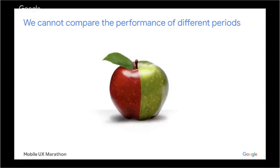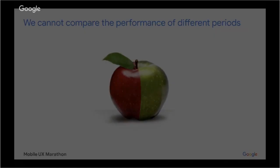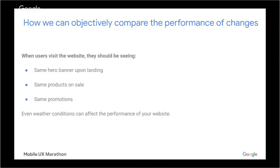When we try to compare, we basically won't be able to compare apples to apples, because we'll be looking at different periods of time with different parameters. In order to compare performance specifically and objectively, users visiting our web page should be seeing exactly the same hero banners upon landing, the same products on sale, and the same promotions. Even the weather conditions matter, because the performance of your website on a sunny day versus a rainy day might be different. How we can deliver these identical situations is by A/B testing.